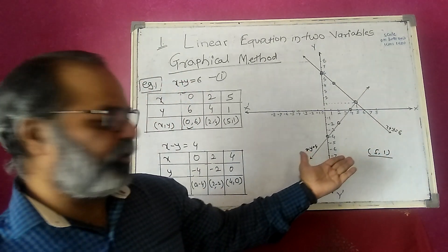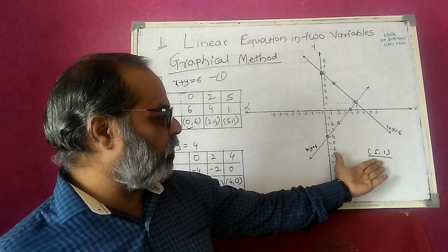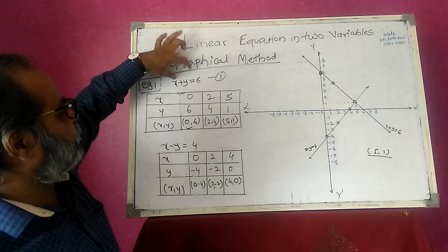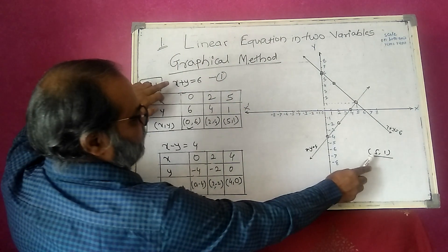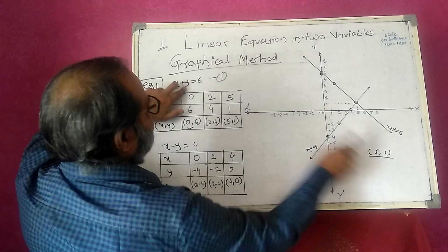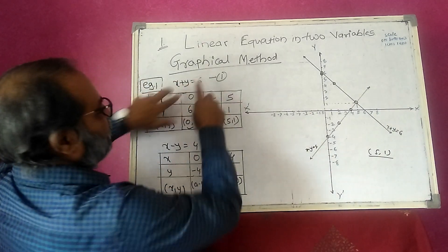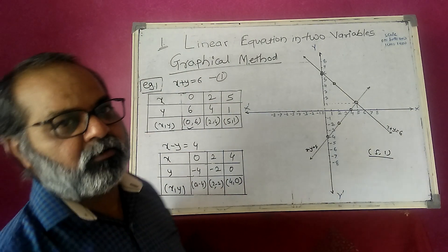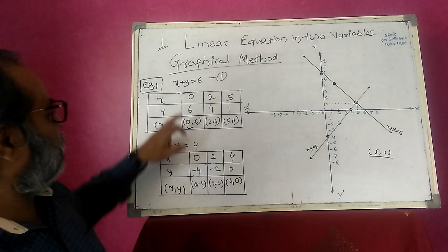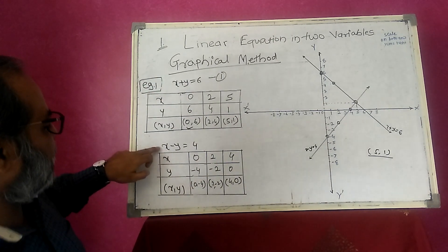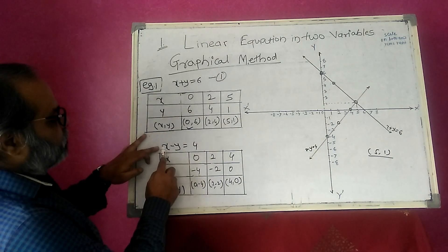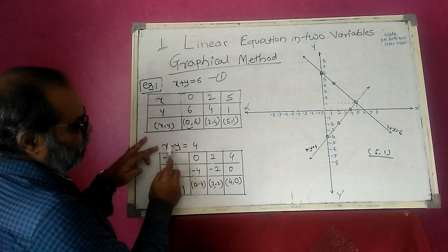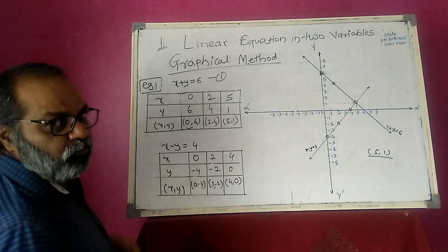We check whether it is right or wrong. Put the values x equals 5 and y equals 1 into the first equation: x plus y is equal to 6 — 5 plus 1 equals 6. Left-hand side equals right-hand side. Checking the second equation, x minus y is equal to 4 — 5 minus 1 equals 4. 4 is equal to 4. Verified.